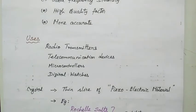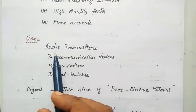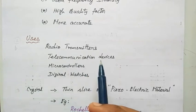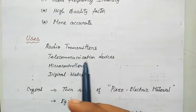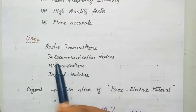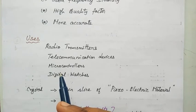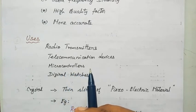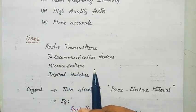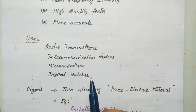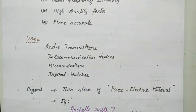Crystal oscillators are used in radio transmitter design, in all types of telecommunication devices, in microcontrollers and microprocessors, and finally digital watches operate using this type of crystal oscillator.